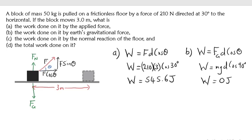In part A we used 30 degrees because the applied force acts in the direction of displacement — theta is 30 degrees. But for the gravitational force, the angle between gravity and the displacement is 90 degrees, so the work done by the gravitational force is zero joules.